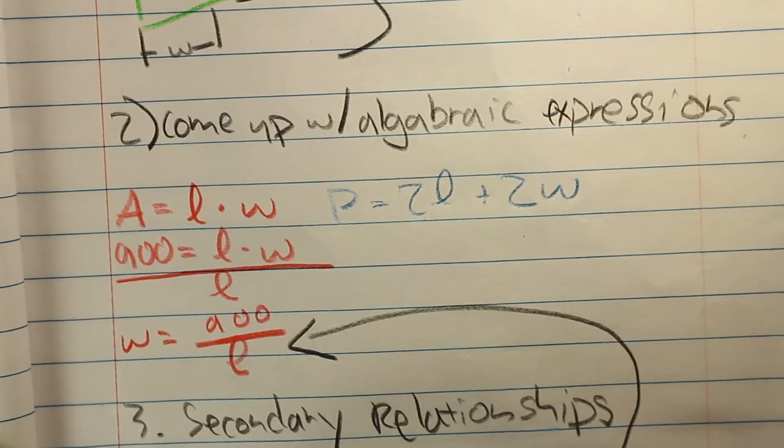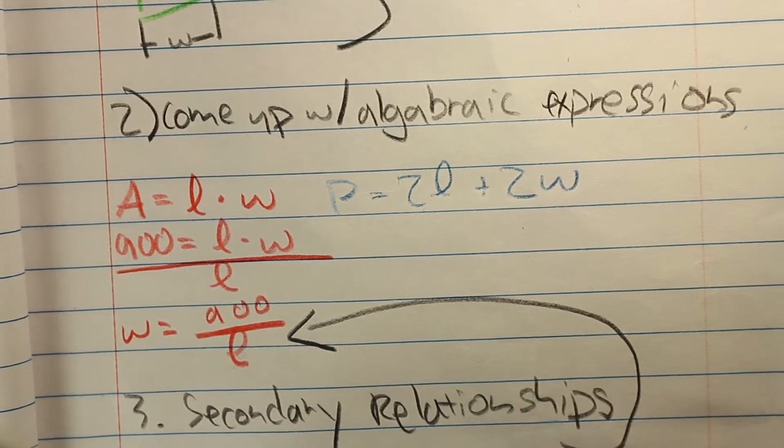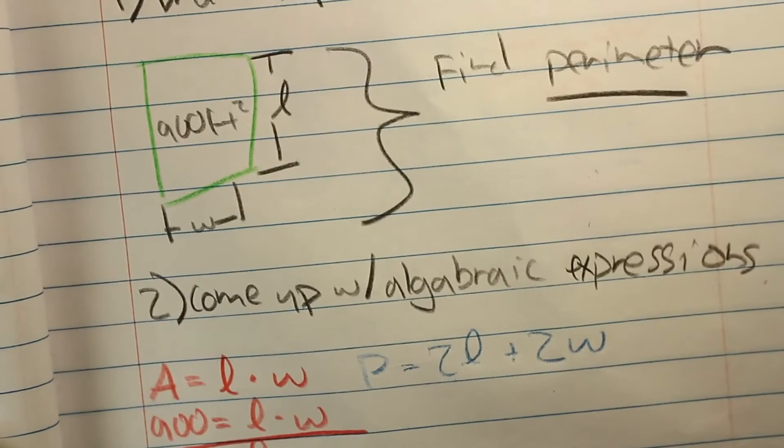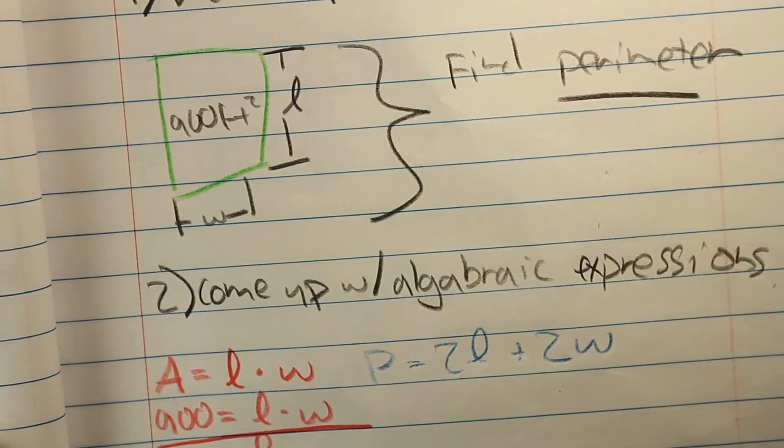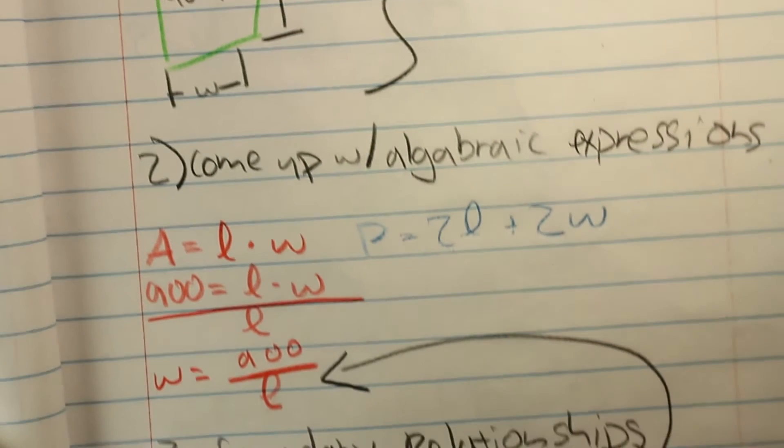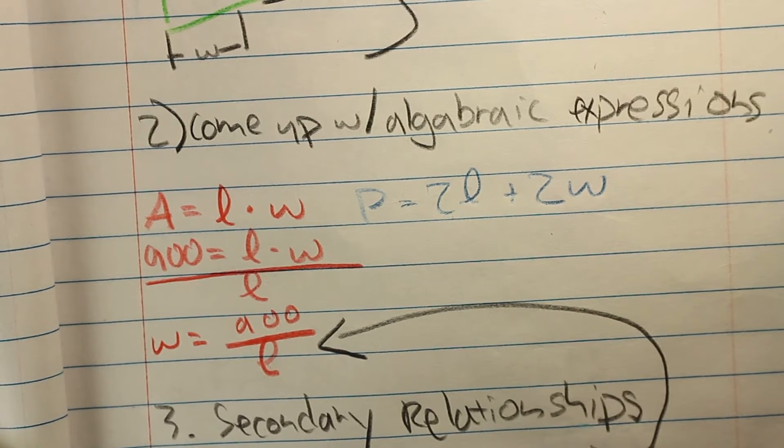Number 2, you want to come up with algebraic expressions that will represent the problem we have. In this situation, we have a rectangle and we are solving for a perimeter and we have a known area, so we will use the area formula and the perimeter formula. Respectively, area is length times width, and perimeter is 2 times length plus 2 times width.